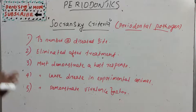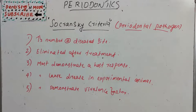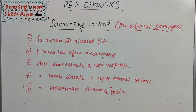Many types of bacteria are present, such as Fusobacterium, Porphyromonas, Prevotella, Treponema denticola, and many types of spirochetes — these are various types of periodontal pathogens.